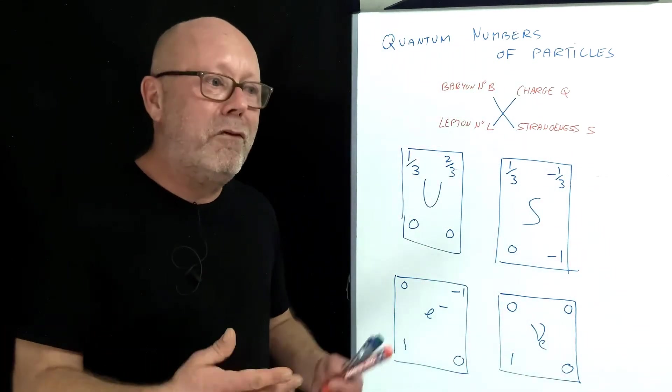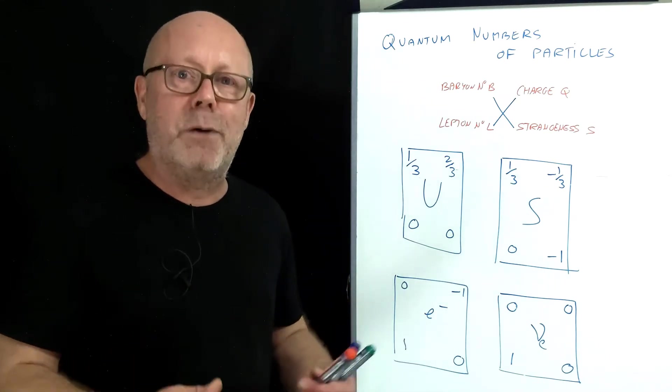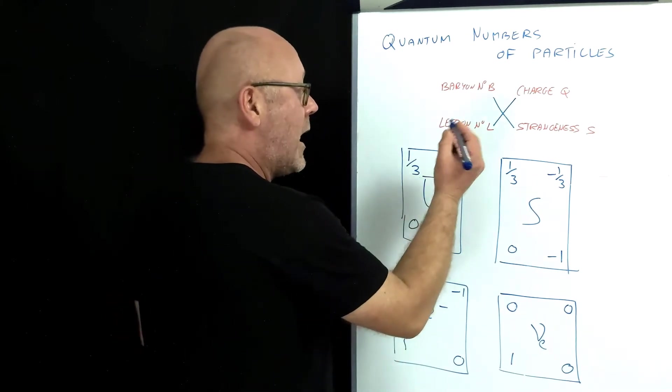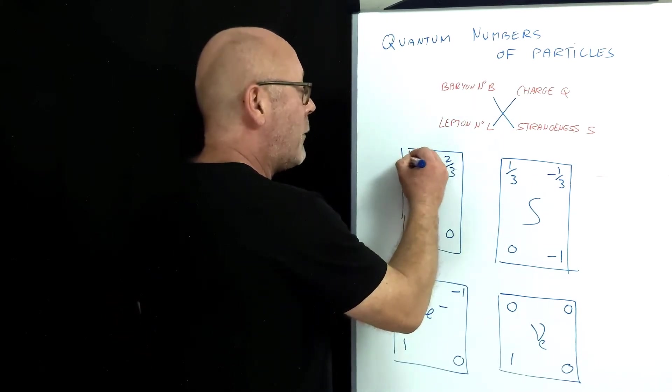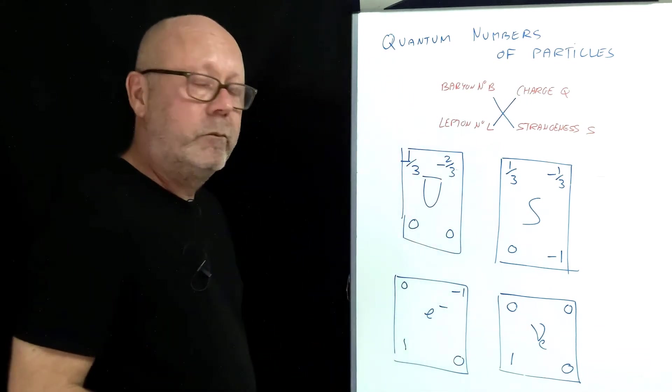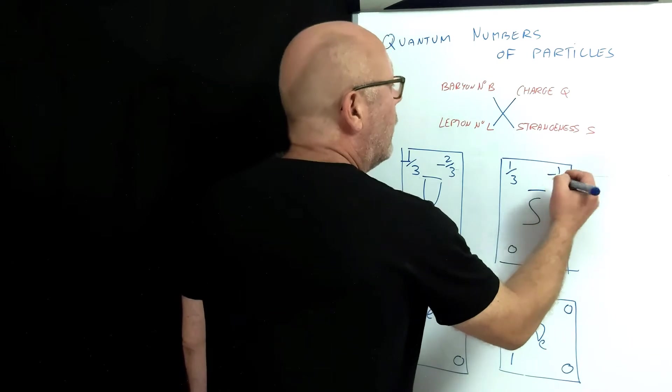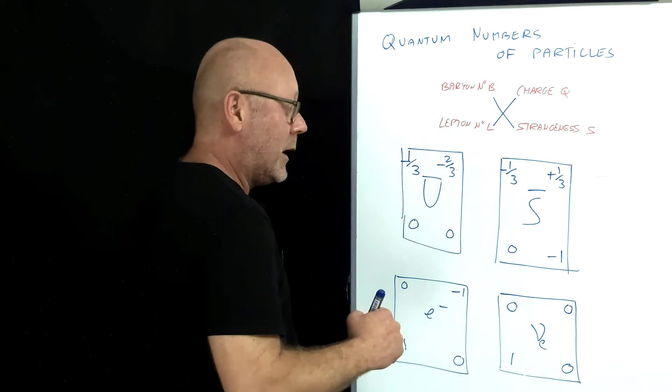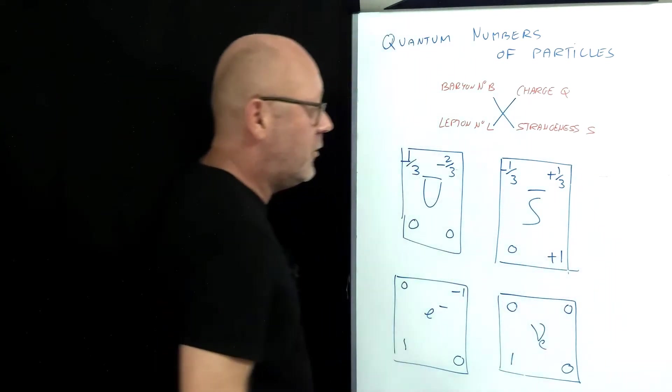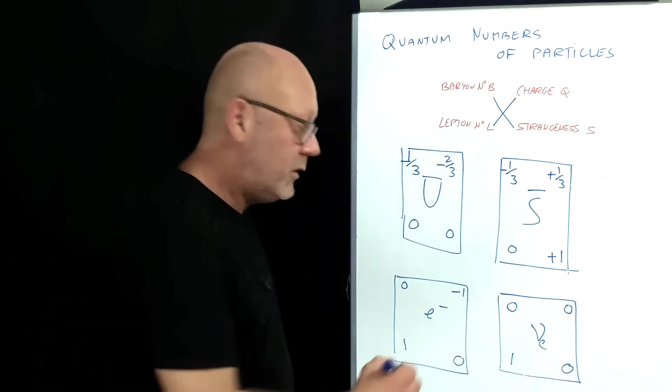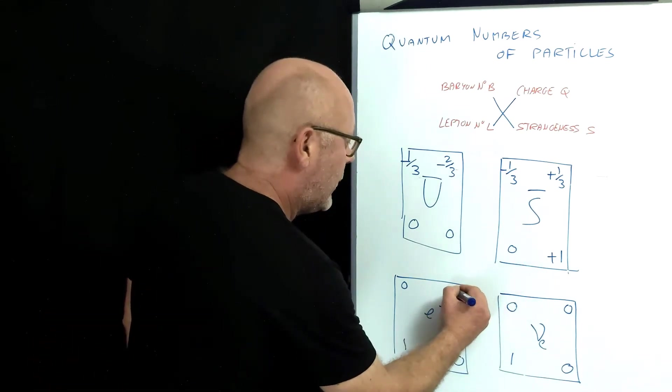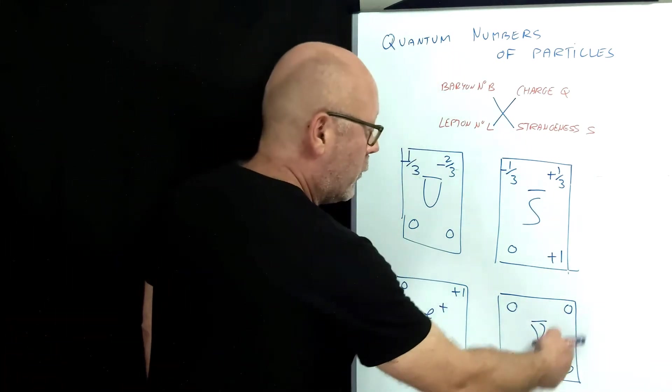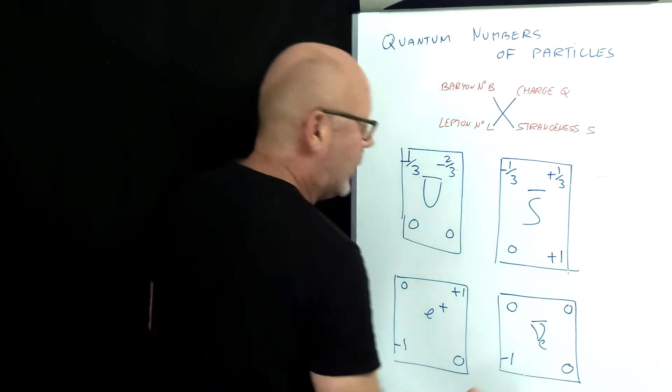As we discussed earlier, all fermions have got counterparts as antimatter particles. So let's consider the anti-up. The anti-up would have a charge of minus two thirds, a baryon number of minus one third, and these numbers stay zero. For the anti-strange, the charge would be plus one third, minus one third for the baryon number, and plus one for the strangeness. For the anti-electron, or the positron, charge of plus one, lepton number of minus one. And for the anti-neutrino, all this stays zero, except for the lepton number, which becomes minus one.